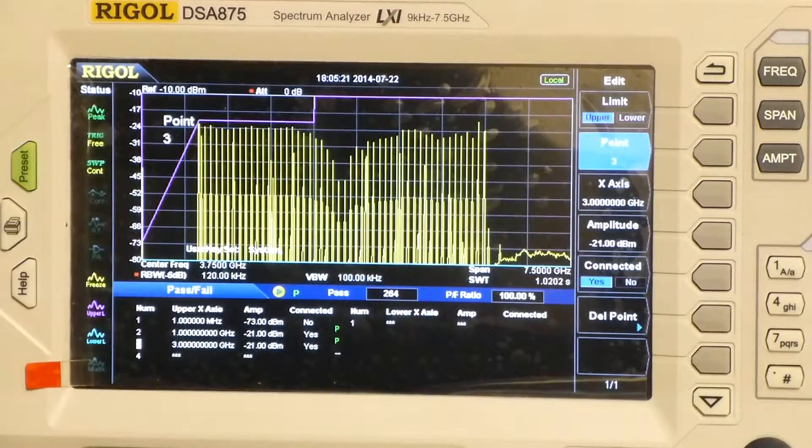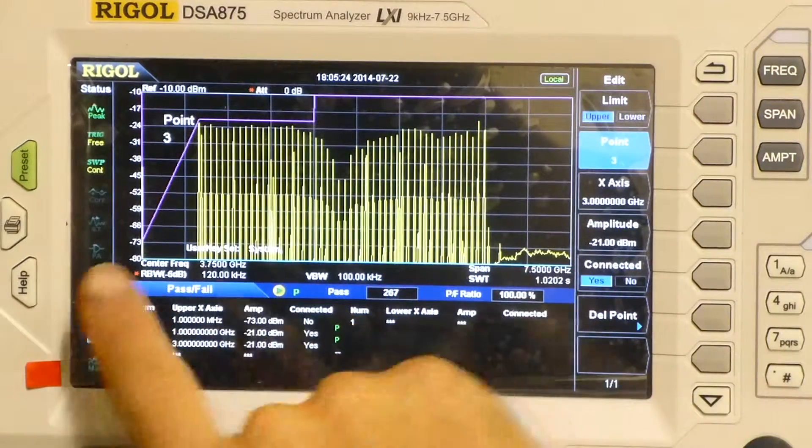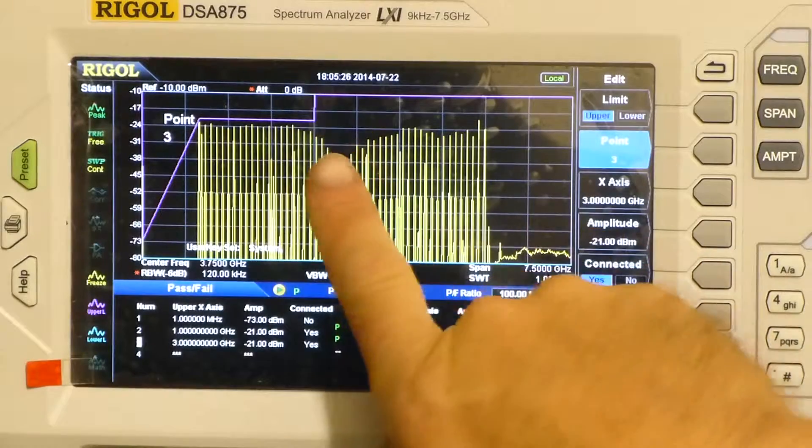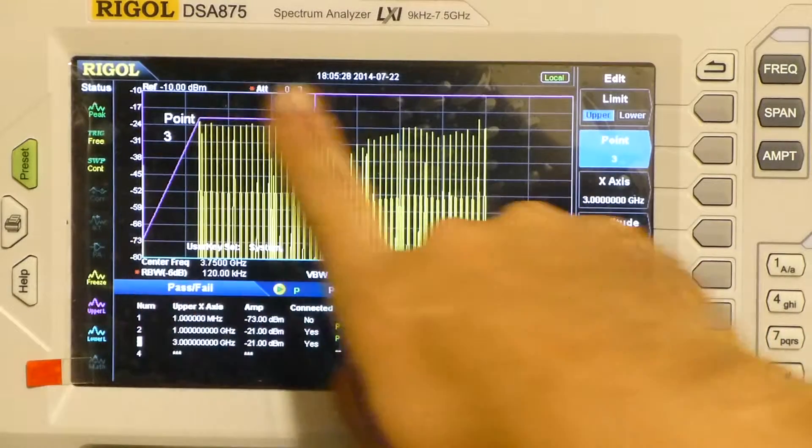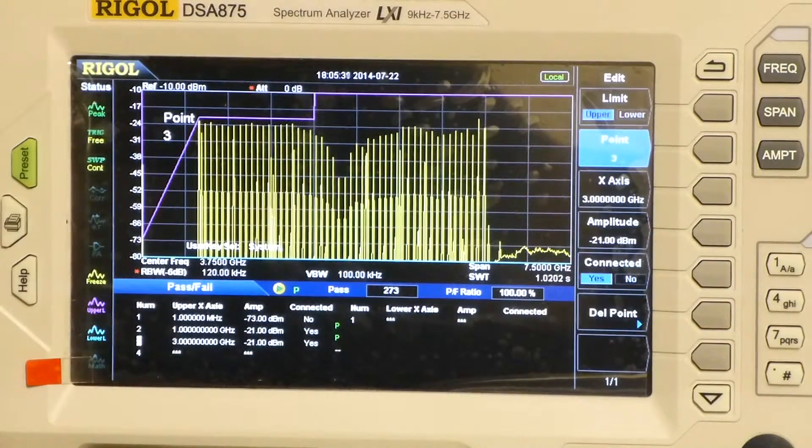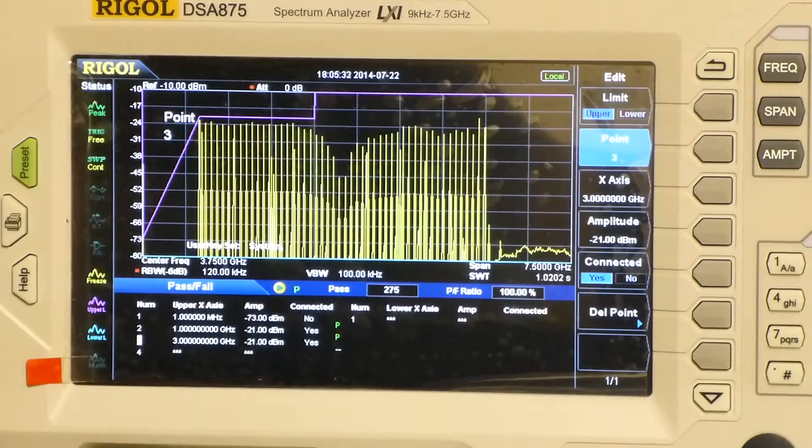So what you can see I have done is start to build a table of pass-fail around my profile. That would be the points that are in the international standard that you are trying to meet for emissions.